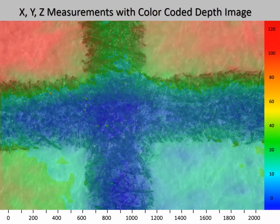The addition of the color-coded depth image verifies this conclusion. We see this because the horizontal line created the continuous groove, whereas the groove in the vertical line was interrupted by the horizontal line. This positively confirms that the horizontal line was drawn after the vertical line.